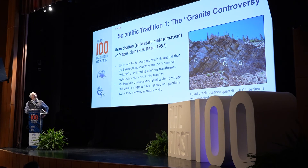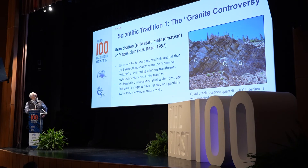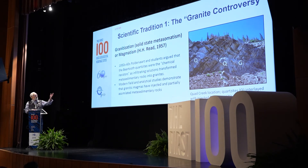In terms of scientific tradition, there are two important points. The first concerns the granite controversy, articulated well by H.H. Read: where do granites come from? In the 1950s and 1960s, Erie Poldervaart and his students from Columbia University hypothesized that granites formed by solid-state transformation called granitization — that metasomatizing solutions passed through supracrustal rocks and transformed quartzites into granites by these infiltrating solutions.